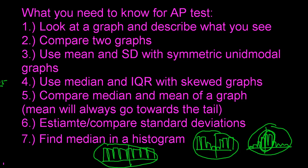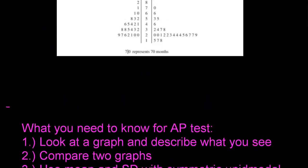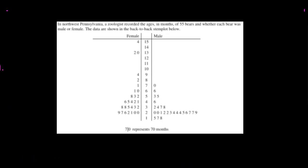Finding the median in a histogram is another key skill. Here's a side-by-side stem-and-leaf plot showing the ages in months of 55 bears, split by male and female. Check the key at the bottom — the units are months, not years. The males appear to have a center around 24 months, and the females somewhere around 44 months. No advanced calculations needed — just use your eyes.